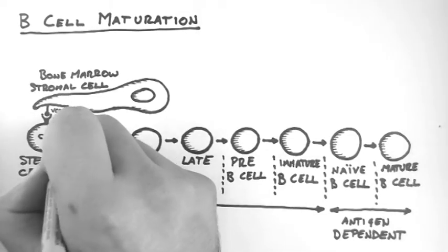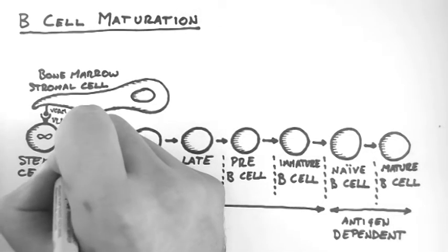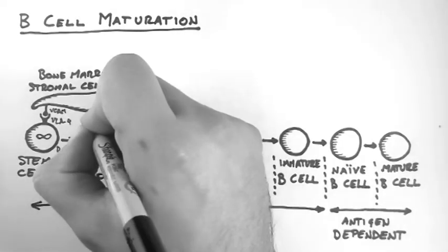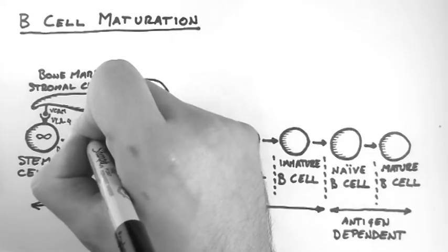At this point, heavy chain DJ rearrangement occurs. If you don't know what I mean by this, see the previous video on antibody production and recombination. Once VCAM1 and VLA4 have bound,